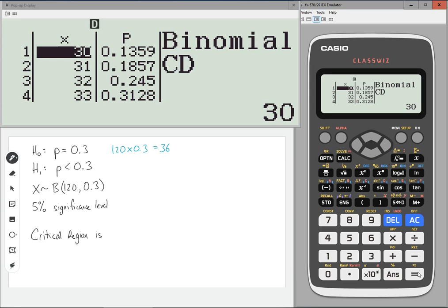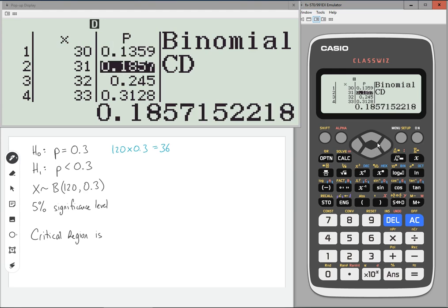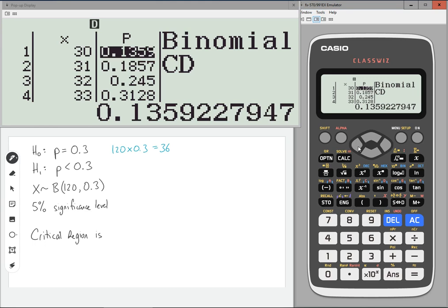Press equals. Now it may take some time to populate, but on the right hand side, we have our probabilities. This is the probability of x being less than or equal to 30. This is the probability of x being less than or equal to 31. Now we're looking for the overlap of 0.05 because of the 5% significance level. So we don't have the values we want.